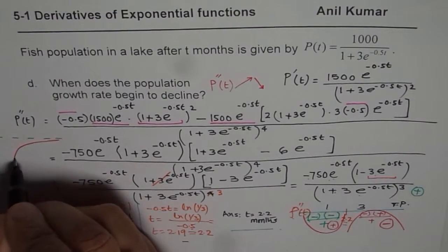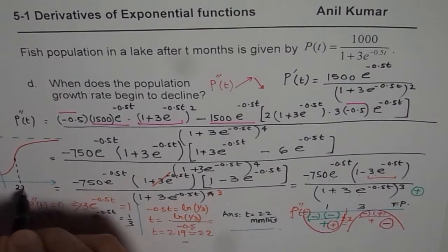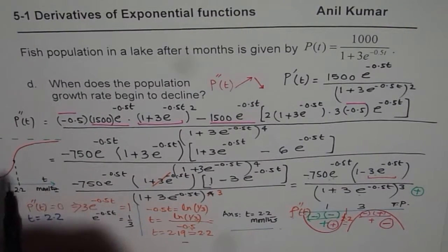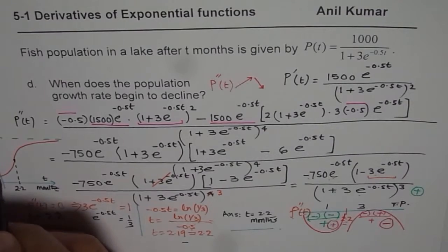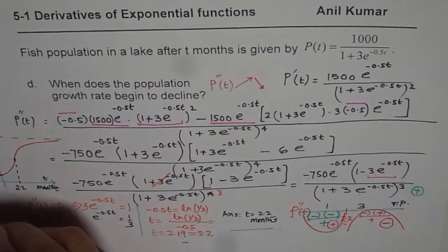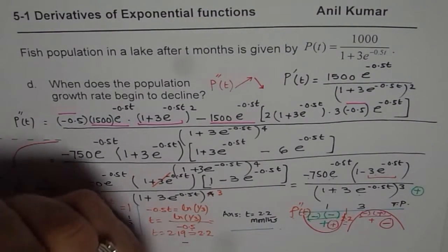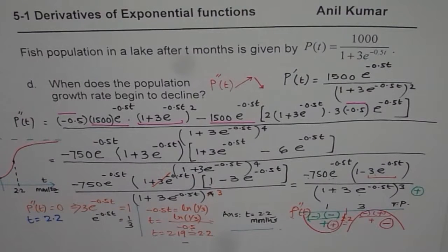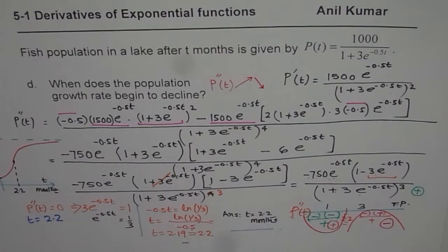The point where concavity changes is approximately t equals 2.2 months. The initial value we found was 250 fish. You can substitute t equals 1, 2, 3 to get more points. I hope you understand and appreciate the concept of working with exponential functions. What we have learned here is how to find the value of the function at different points, how to find the derivative and second derivative, and understand a real life situation. Thank you and all the best.